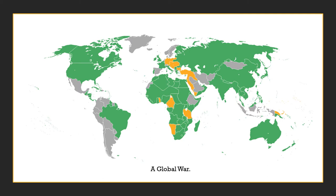What really makes World War One different from anything before was that it was truly a global war. Because Europe had set up colonies all around the world, when they went to war their colonies went to war too. On a map of the world, everywhere that is colored — either green or yellow — is at war. Only the gray areas are technically neutral, but even then those neutral areas were being forced to take sides on who they trade with, walking a very fine line, and were still affected by the war economically. This is a truly global conflict in every sense of the word.